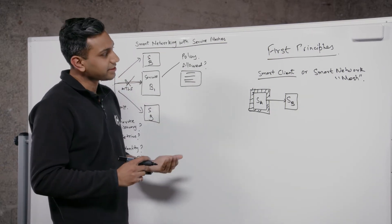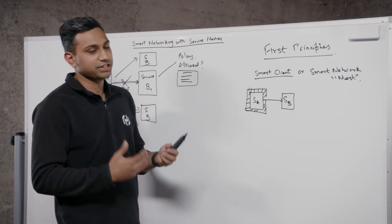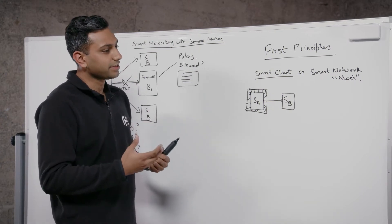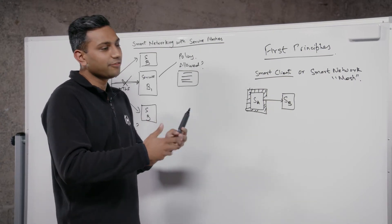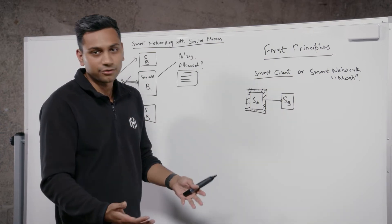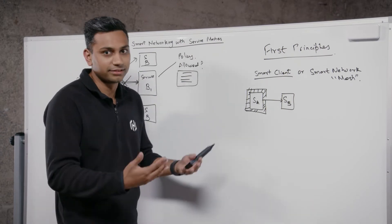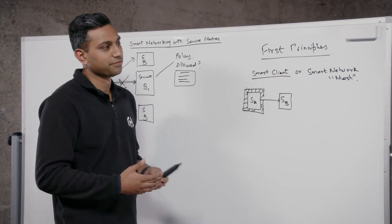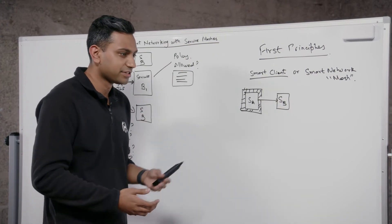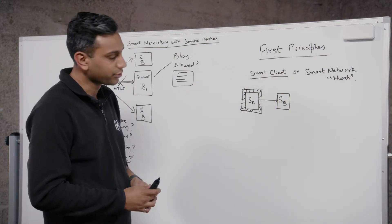Where it gets interesting is if you were a polyglot organization — using JavaScript, Golang, PHP. It becomes really interesting because you'll need to duplicate code in a way. You'll need to create the same set of libraries for each of those languages and share them across the organization. And if you have to update the libraries, it becomes more and more difficult because those updates have to be applied across three or four different languages. You need to coordinate between teams. Those are the challenges you see in the smart client approach.